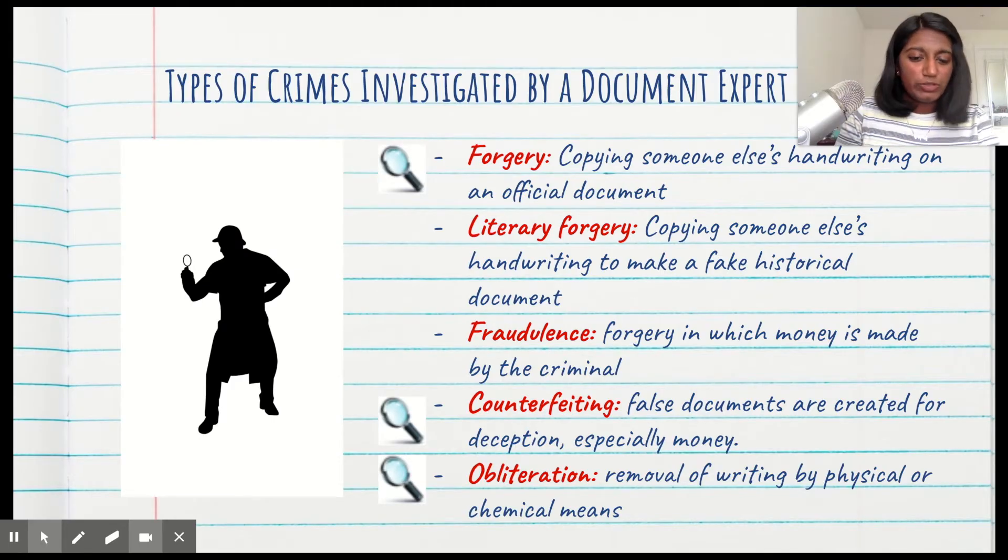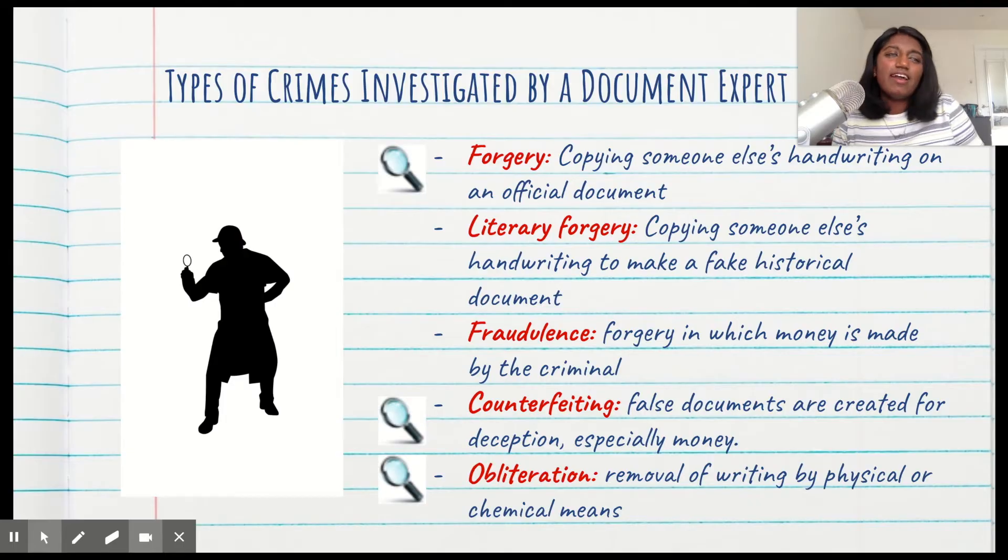And then finally, we have obliteration, which is the removal of writing by physical or chemical means. So let's say someone writes 'I gave all the money to Sarah and Tom,' and let's say I want all the money. So I'm going to take out 'and Tom,' obliterate it, so it just says 'I'm giving all the money to Sarah.' That would be an example of obliteration, which would be a crime, obviously.